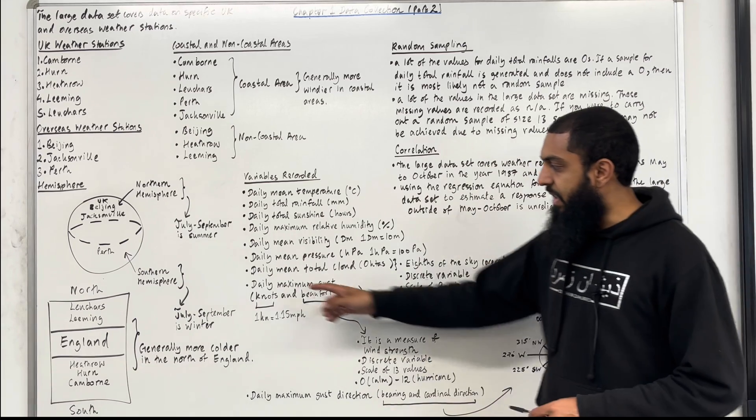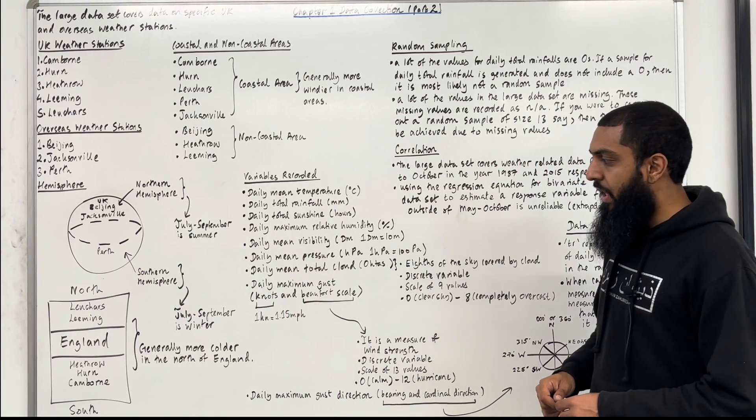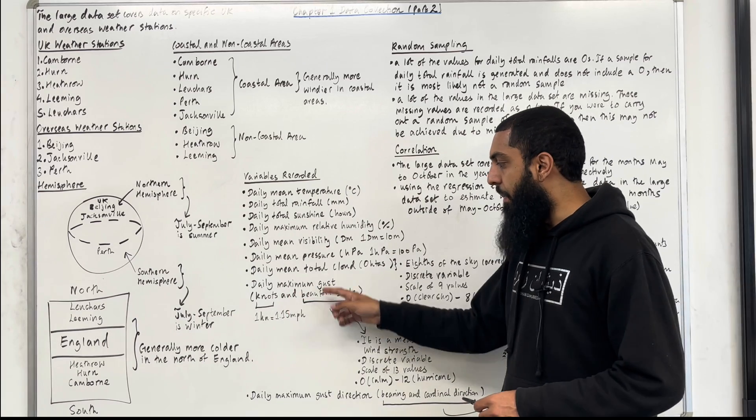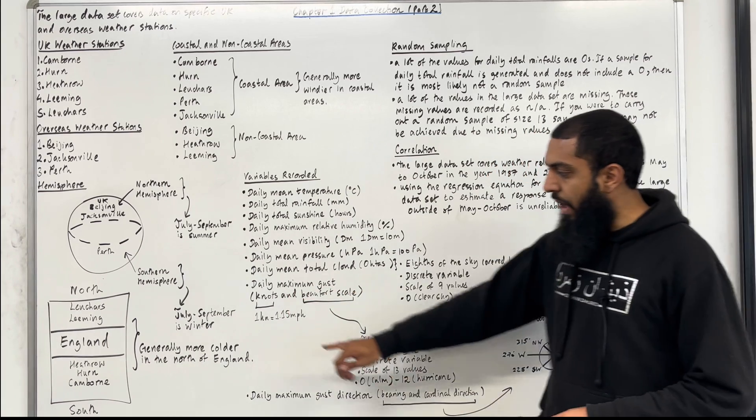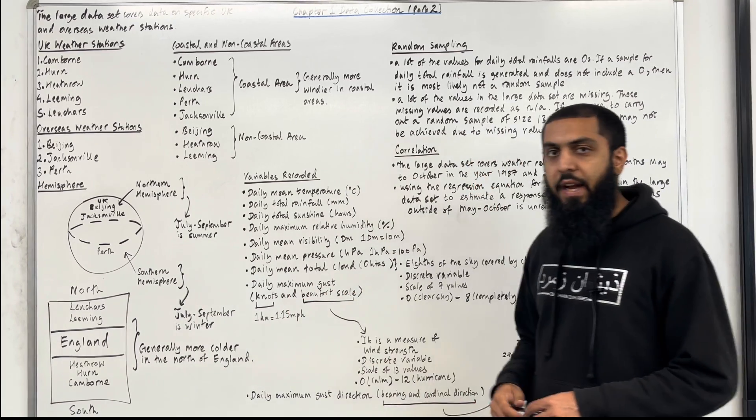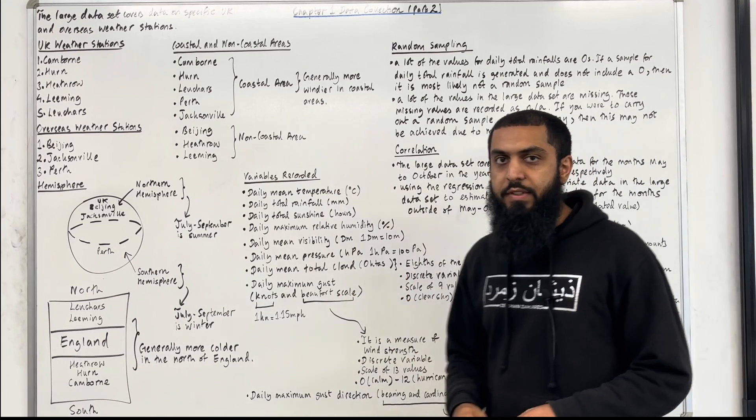Moving on to daily maximum gusts. It is measured in knots and Beaufort scale. One knot is equal to 1.15 miles per hour. Let's have a look at the Beaufort scale.